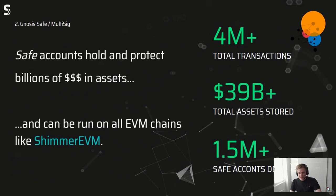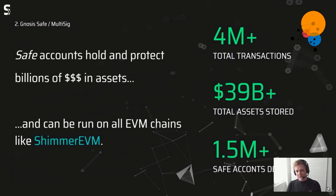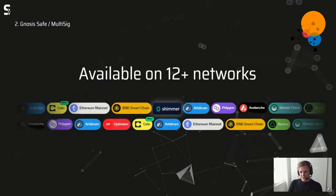Safe currently holds a total of over four million transactions. They have assets stored with a value of over 39 billion dollars and over 1.5 million Safe accounts deployed — so this thing is really big. Safe accounts hold and protect billions of dollars in assets and can run on all EVM chains like the Shimmer EVM. This big sum basically comes from availability across different networks.